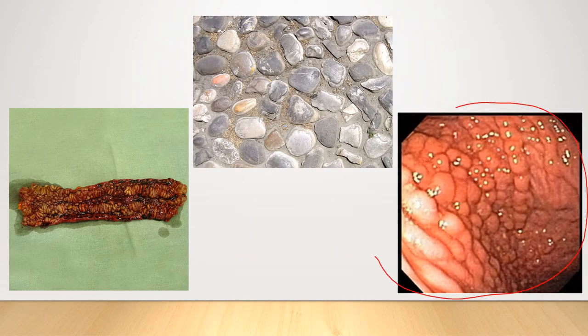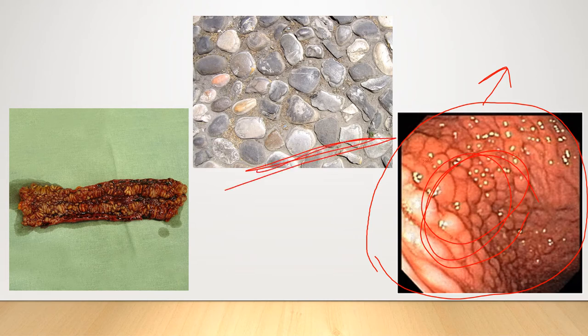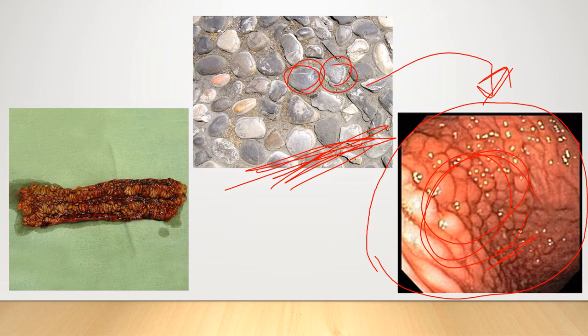This slide shows the cobblestone appearance in Crohn's disease. The endoscopic image during examination shows the intestine appearing like cobblestones. Cobblestone is a natural building material of cobble-sized stones used in pavement of roads and streets — and this is how the small intestine appears when affected by Crohn's disease.